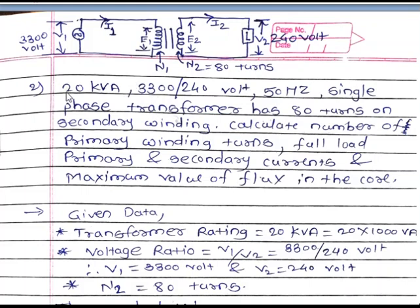In the given data, the transformer rating is 20 KVA, the voltage ratio is 3300 by 240 volt, and frequency is 50 Hz. The transformer is a single phase transformer. The rating 20 KVA is converted into volt-ampere — K means 1000, therefore 20 into 1000. The voltage ratio is V1 by V2, where V1 is equal to 3300 volts and V2 is equal to 240 volts.